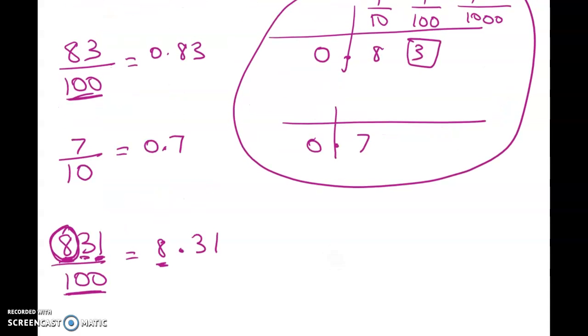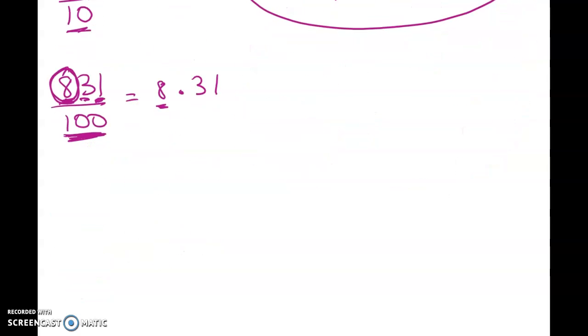So if we've got a denominator that is 10 or 100, it's reasonably straightforward to go from a fraction to a decimal. That's what we're going to have to do when we don't have a power of 10 in my denominator.